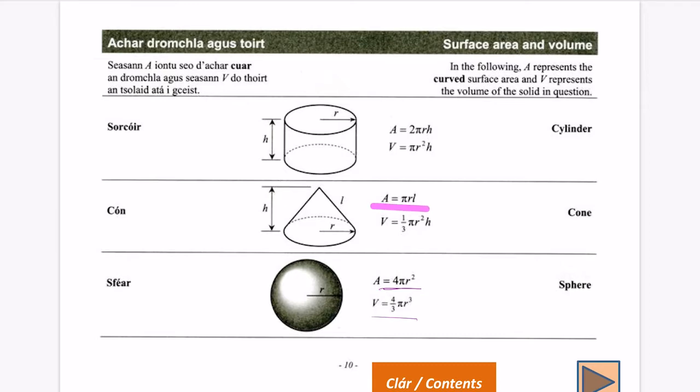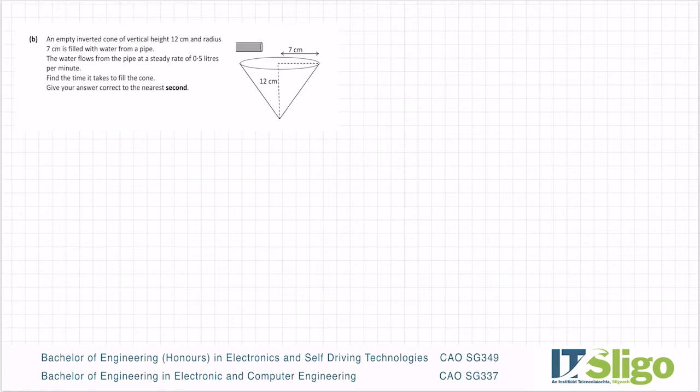Area is πrL, volume is one-third πr²h. Up here it explains A represents the curved surface area, so if you get a question about curved surface area you're going after the A formula. If you get a question about volume, then you're going after the V formula. So let's come back to ours.